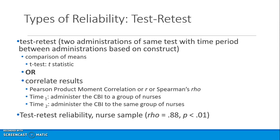Test-retest involves two administrations of the same test with a time interval. A t-test or correlation coefficient can be used. For example, you might use the Pearson, which is an interval-level correlation coefficient, or Spearman's rho, which is a non-parametric one for ordinal-level data.